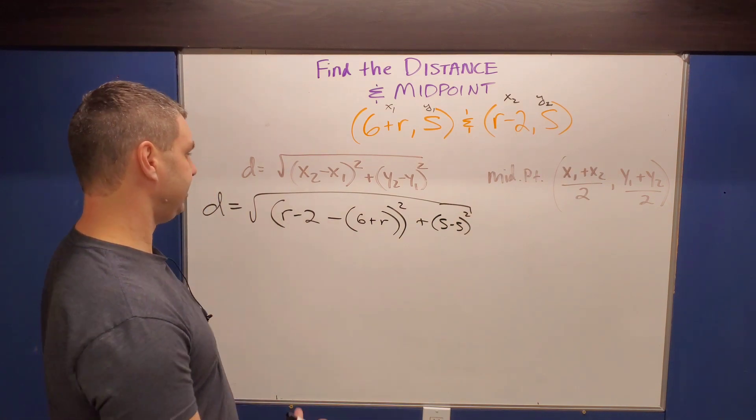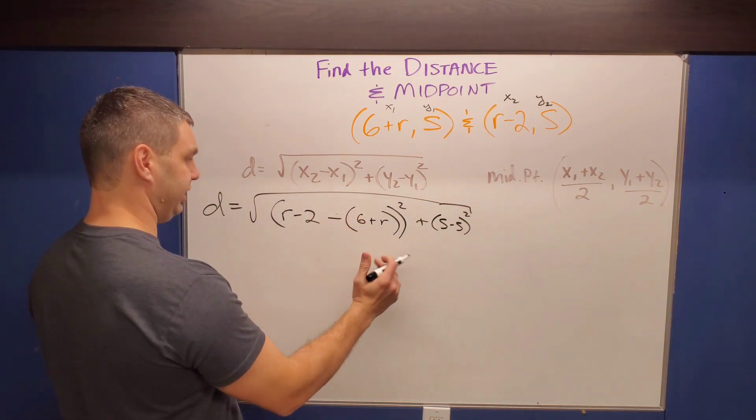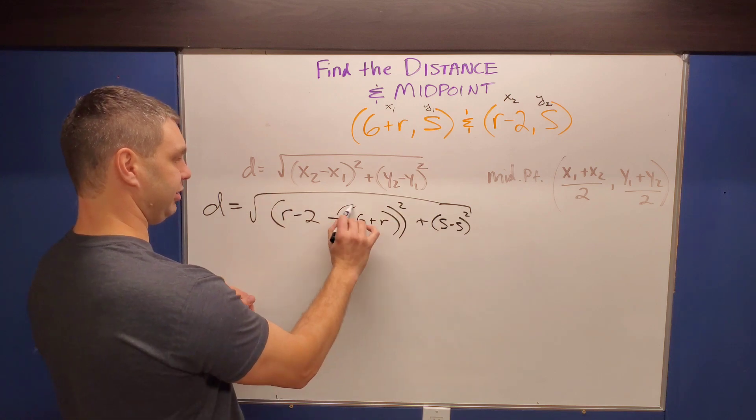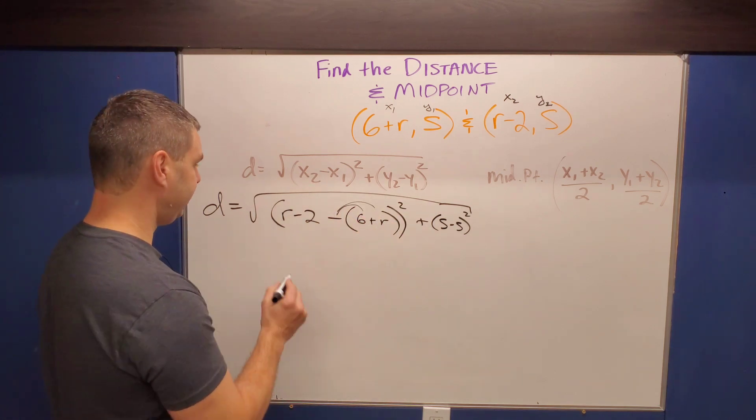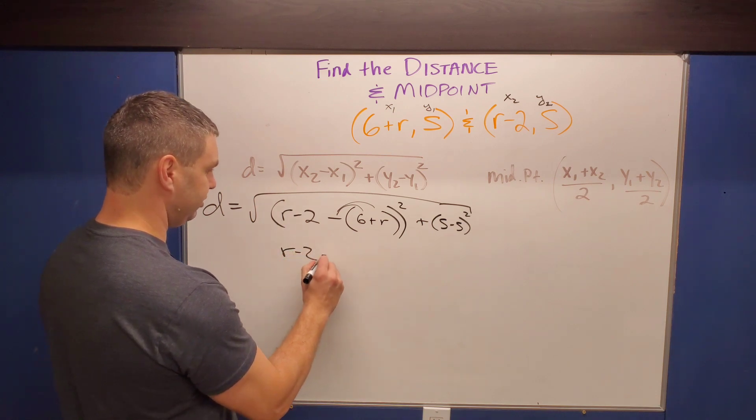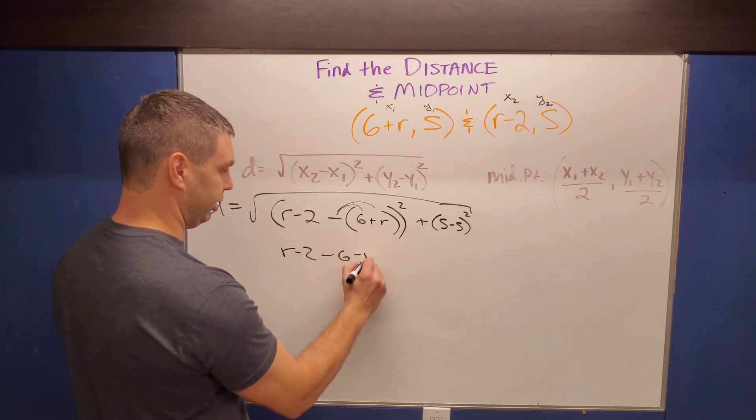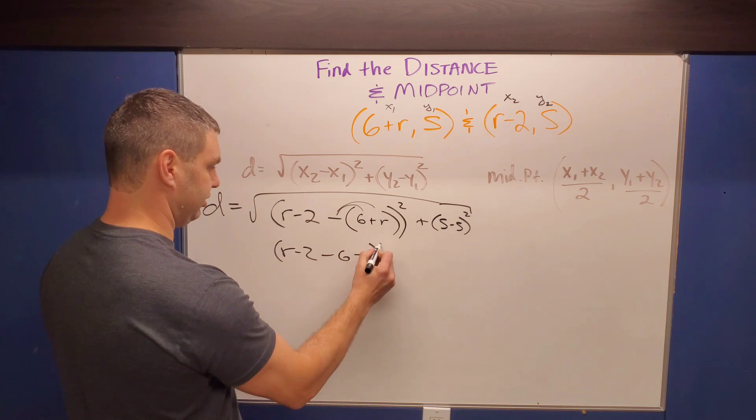We'll get to that being a zero here in a second, but let's take care of this first part. And we do have to distribute. If you think there's kind of two sets of parentheses, you have to deal with this first inner set, all right, by distributing the negative in there, giving me R minus two minus six minus R, right?